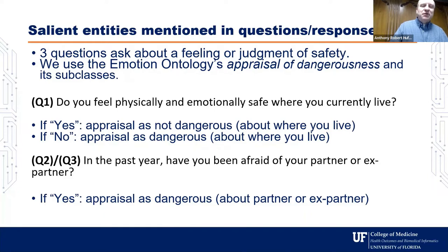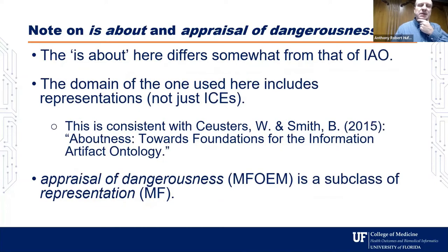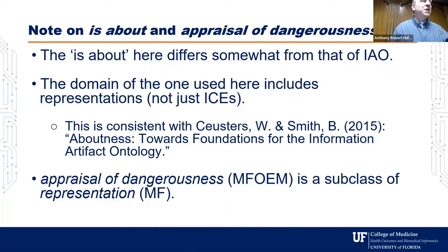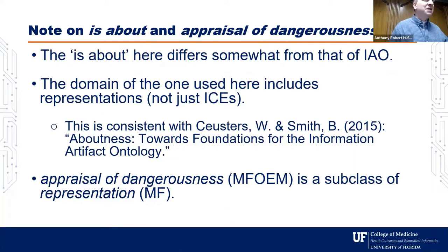For questions two and three, if you've been afraid of your partner or ex-partner and the answer is yes, then the appraisal as dangerous is about that partner or ex-partner. We note that in the emotion ontology and mental functioning ontology, the concretizations of information are called representations and those have the about-this relation — not the information content entity itself. It's a nuance; we followed their convention.